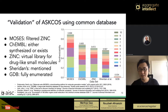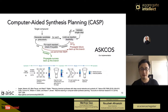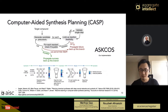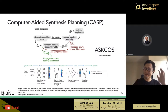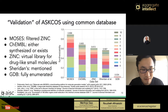Host: How is ASKCOS trained? What type of database do you use, and is there any relation between the training data and the validation datasets? Wenhao: The dataset used to train these networks is reaction data from USPTO — the US Patent and Trademark Office — and the Reaxys database. Host: Is there any overlap between that dataset and the ones you're using for validation? Wenhao: I don't have information about that. That's a good question — we may need to examine that point.